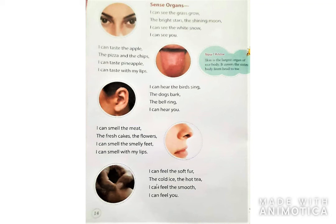Next is skin. I can feel the soft fur, the cold, the hot tea, I can feel the smooth, I can feel you. यह हम कौन से organ से कर सकते हैं? हमारी skin से। हमारी skin से feel कर सकते हैं कि कोई भी चीज soft है, hot है, cold है — वो हम हमारी skin से कर सकते हैं। There are 5 sense organs: eyes, tongue, ear, nose and skin. Skin is the largest organ of our body. यह हमारी body का सबसे largest body part है। It covers the entire body from head to toe. यह हमारी पूरी body को cover करती है।